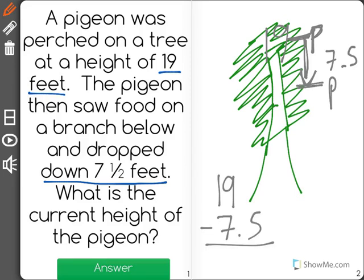A simple way to solve this is to do 19 minus 7, which is 12, but then we also have to remember to subtract the 1⁄2 and 12 minus 1⁄2 or 12 minus 0.5 is going to be equal to 11 1⁄2 or 11.5 feet.